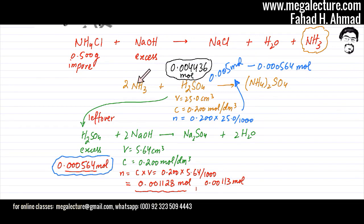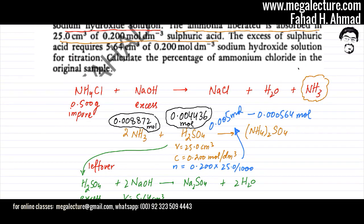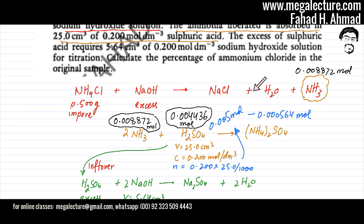Since one mole of H2SO4 reacts with two moles of NH3, the moles of ammonia = 2 × 0.004436 = 0.008872 moles. These are the moles of ammonia produced in the first reaction. And since NH4Cl and NH3 are in a 1:1 ratio, the moles of NH4Cl also equal 0.008872 moles.